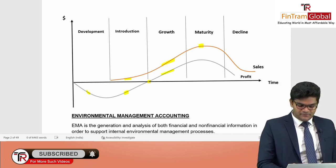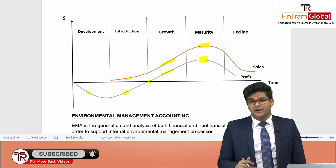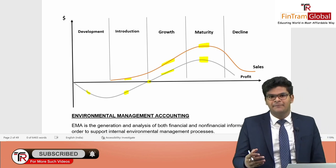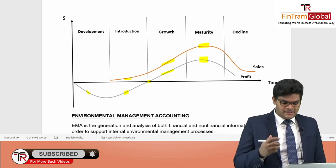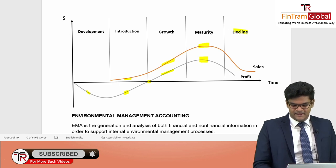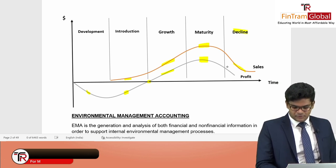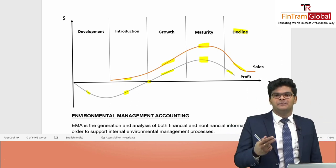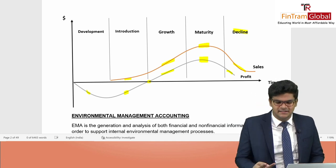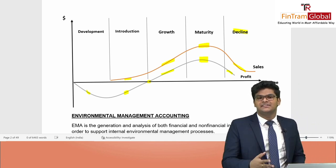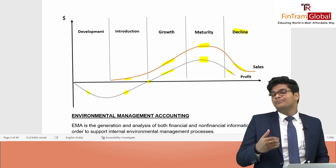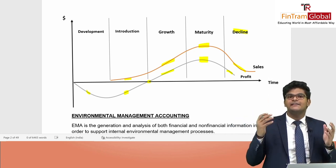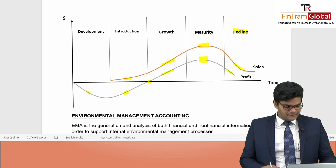After growth, we reach the maturity stage — the maximum point of sales and maximum profits. Then it moves into the decline phase where sales and profits decrease. At this point, management may take one of two decisions: either shut down that particular product or take initiatives to extend the maturity period.